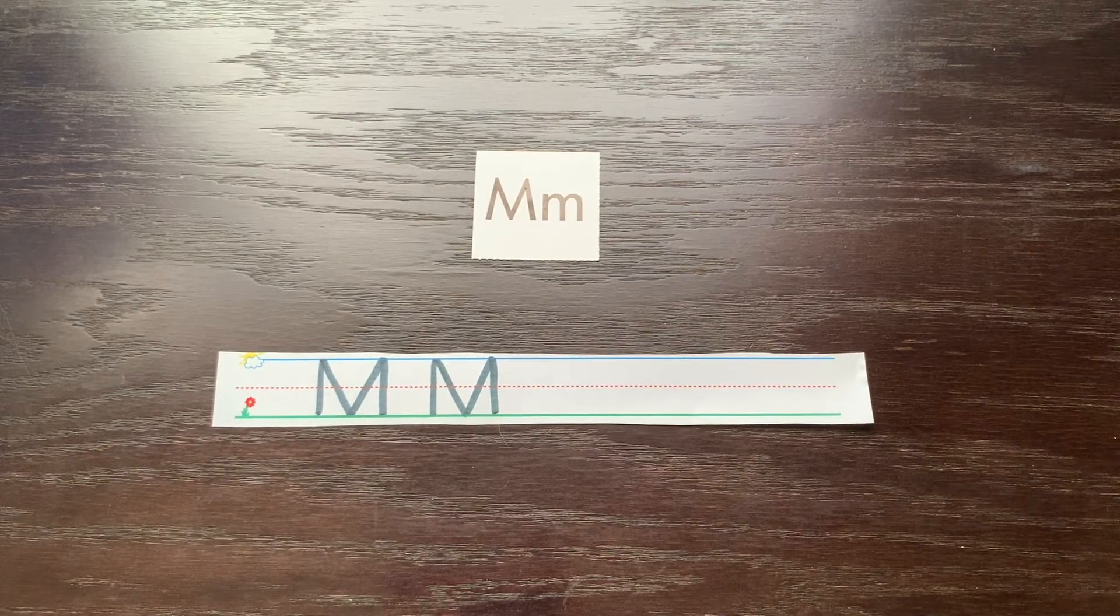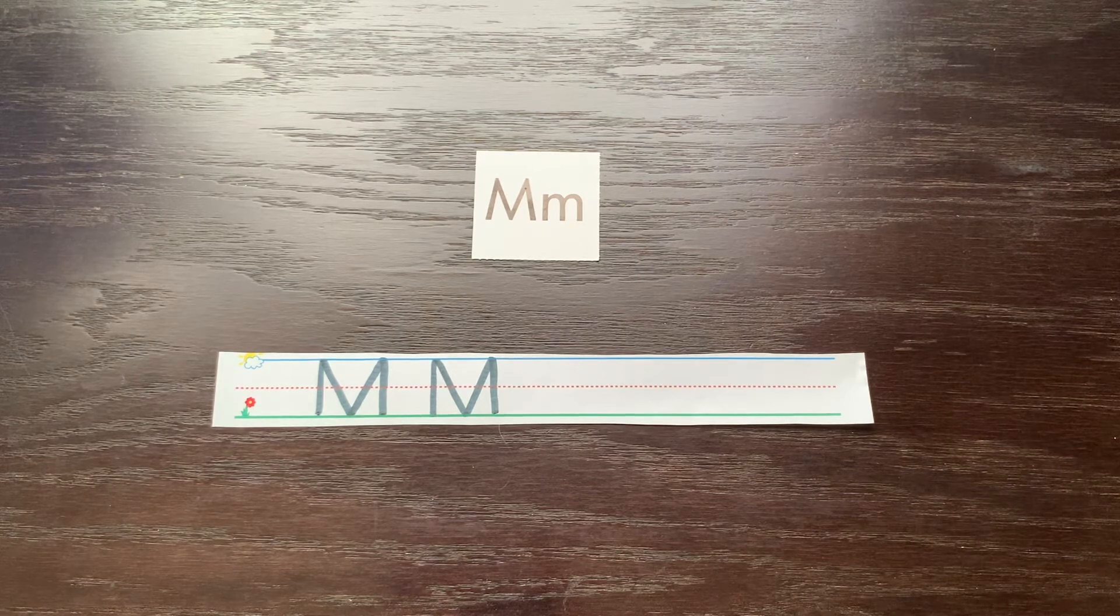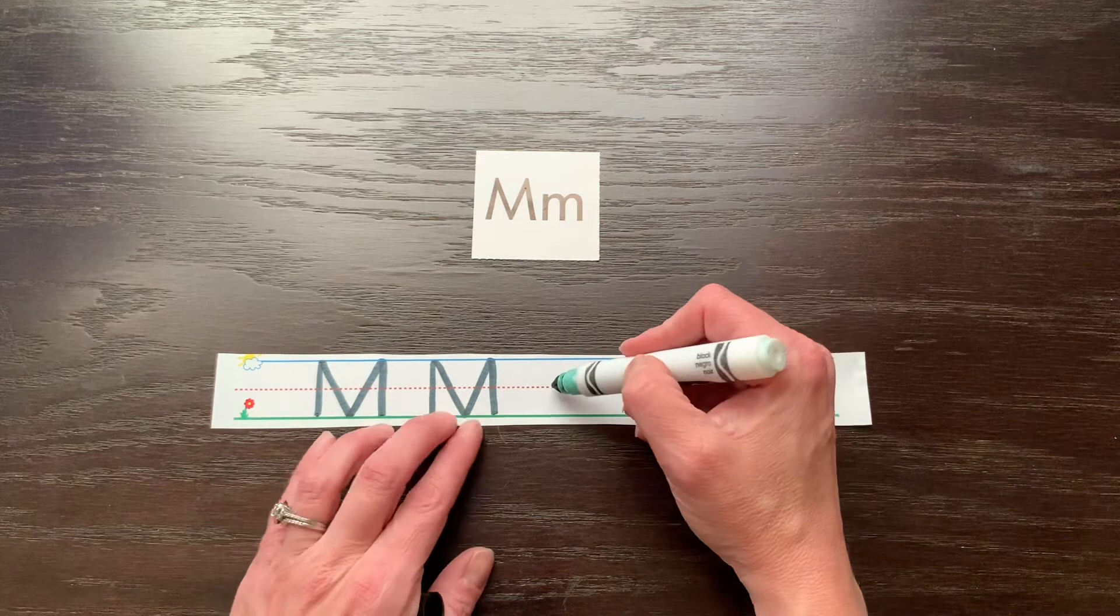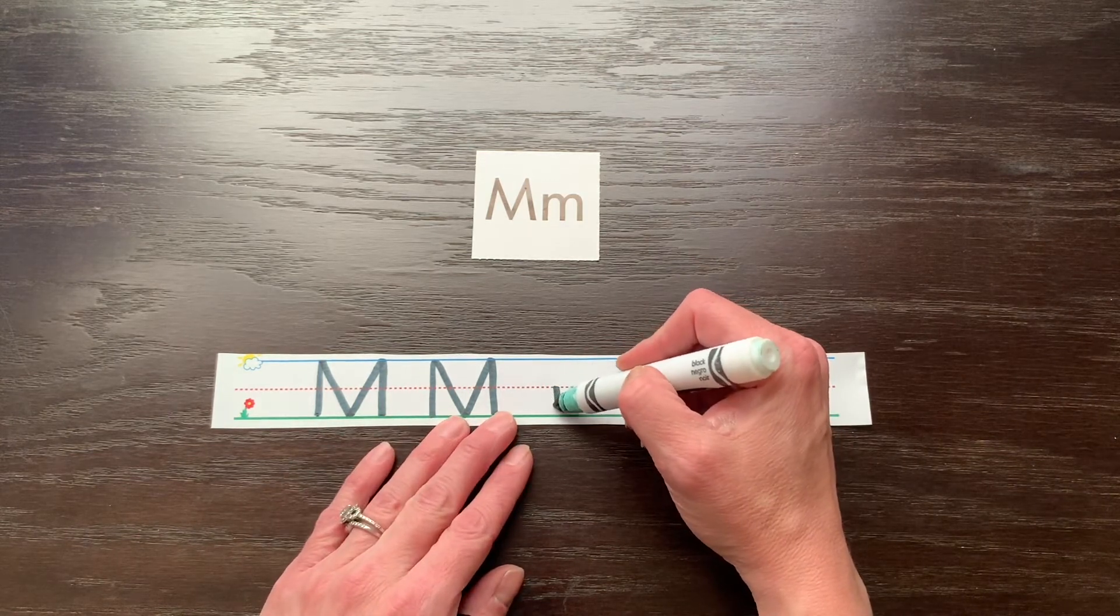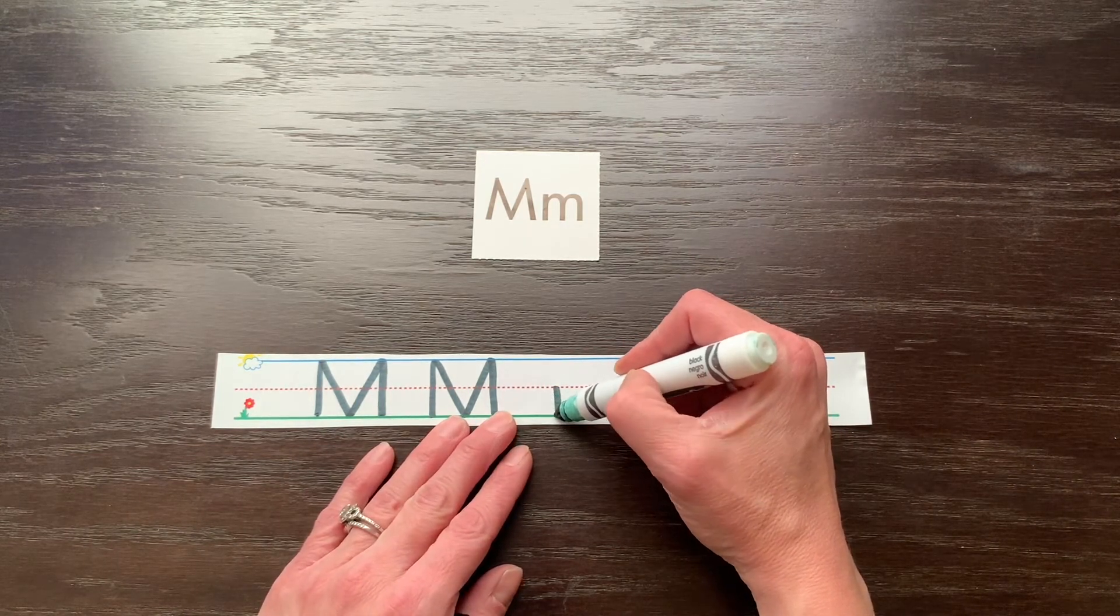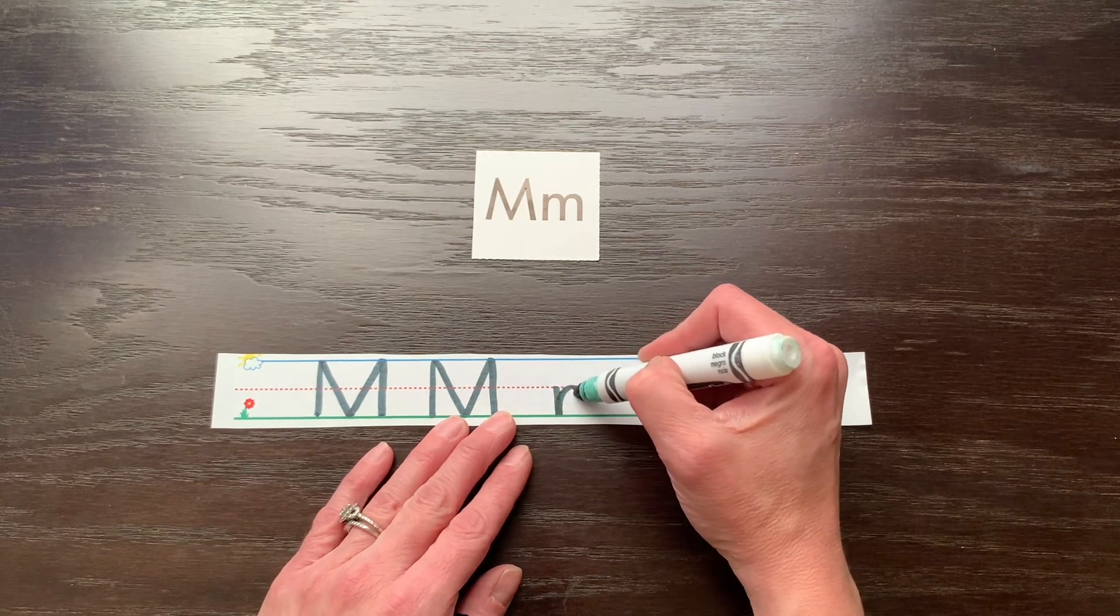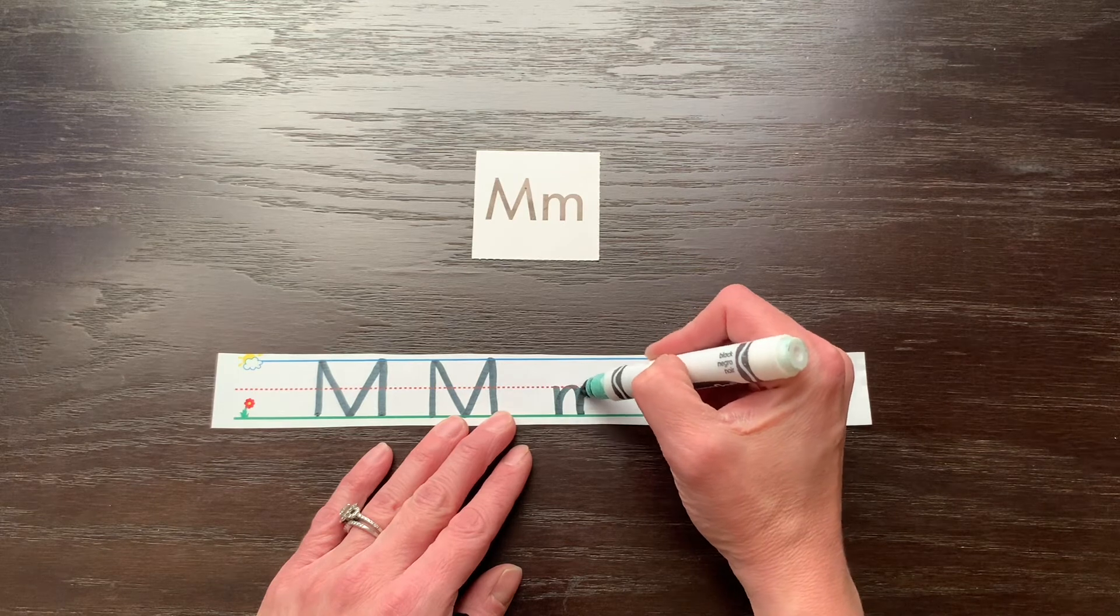Now lowercase m, you do not pick up your pencil and it does not start at the top. It starts in the middle. So you go to the middle dotted line. You go down to the ground but this time you're going to do an elevator. So that means you go up the same line and bump, up and bump.